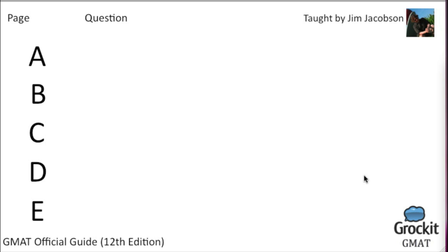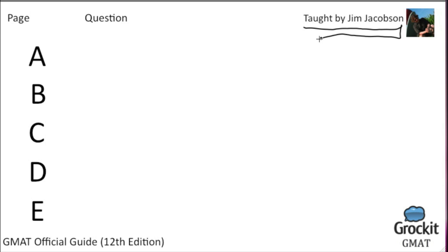Welcome back to Grokett's OGTV. You're watching the GMAT edition. We're going through the 12th edition Guide to the Test — it has the purple cover with the big 12th edition on it. We've been going through a number of problems already and have gotten through page 280, finishing with question number 86. We're about halfway through the data sufficiency section and we're going to do another 14 problems. My name is Jim Jacobson and I'm one of the tutors on Grokett.com. Without further ado, let's get started.